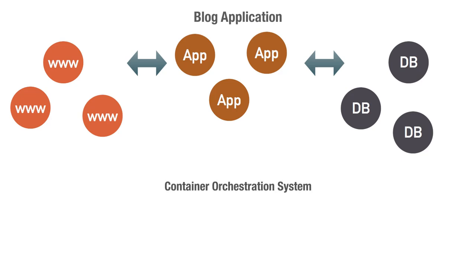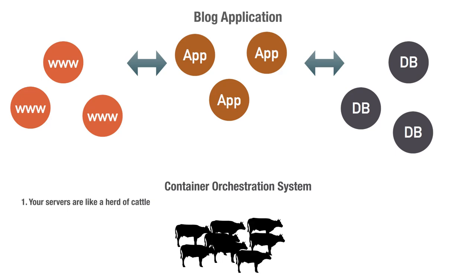A container orchestration system has two main aspects when working with containers. The first is that it treats your servers like herds of cattle, not pets. I'll interchange the terms 'server' and 'container' a lot in this class. If you have a pet like a dog, you care for it, name it, feed it, walk it, and nurse it when it gets sick. With a herd of cattle, you don't bother naming each one or spending hours caring for each. If a cow dies, the rest of the herd is not affected.